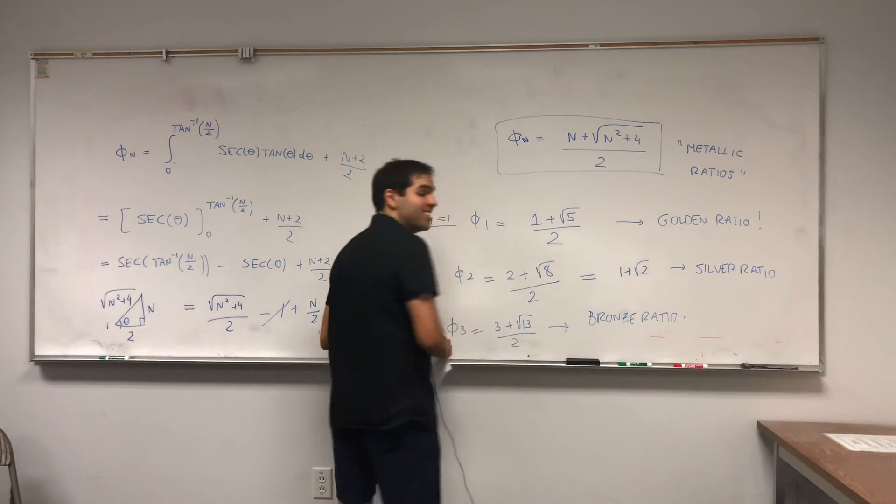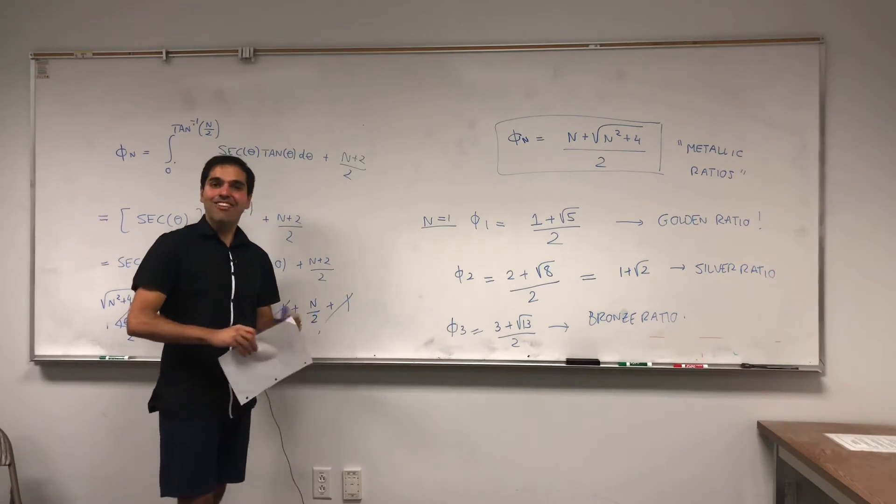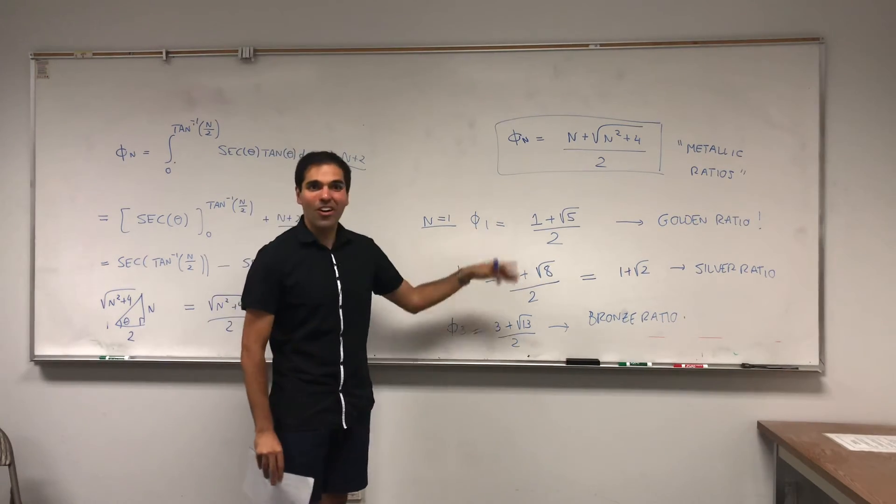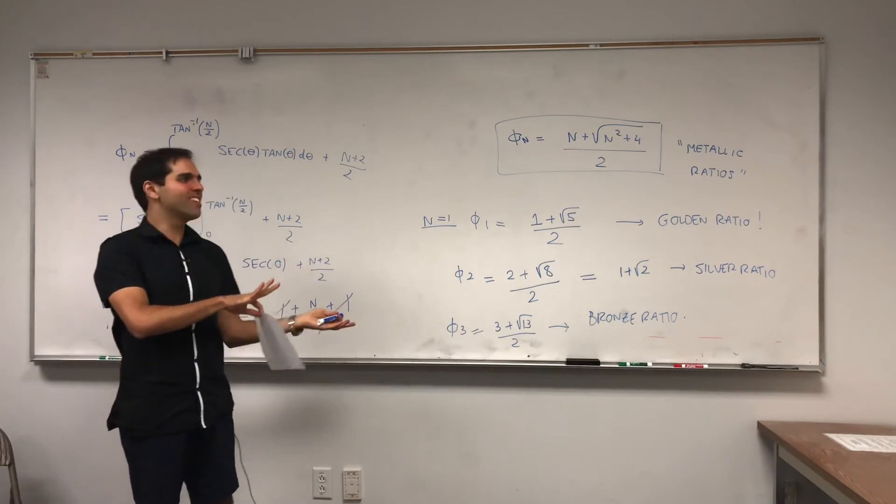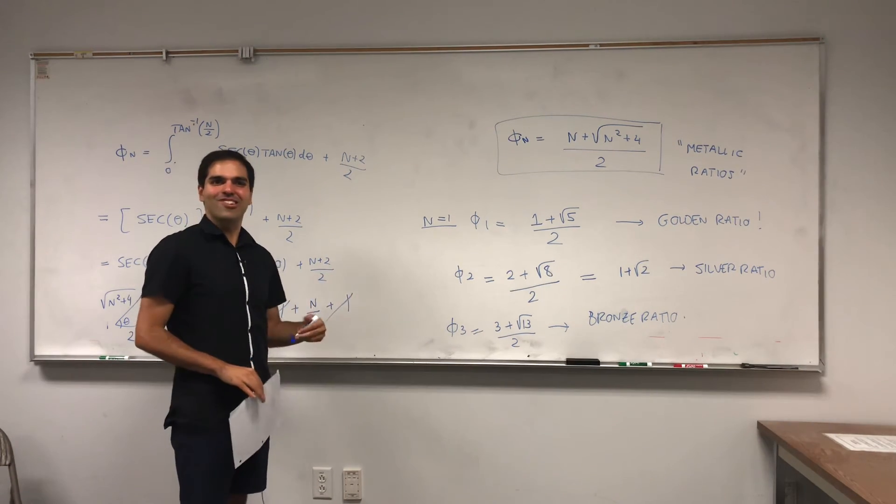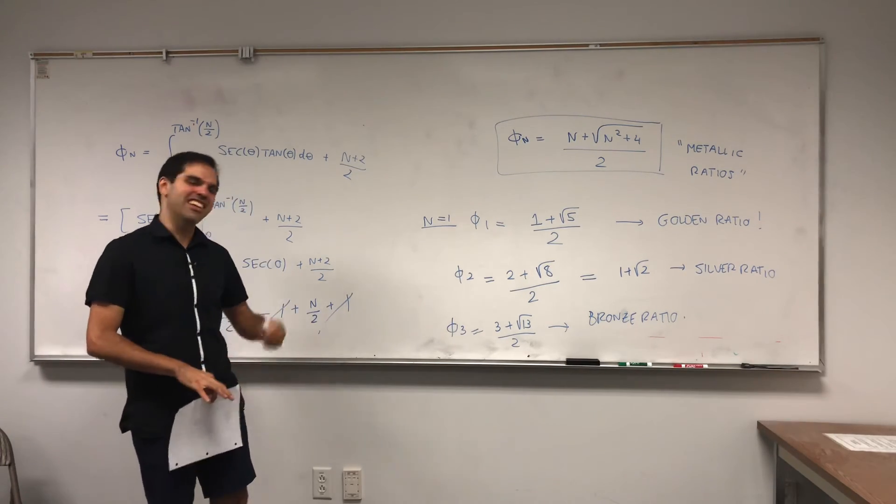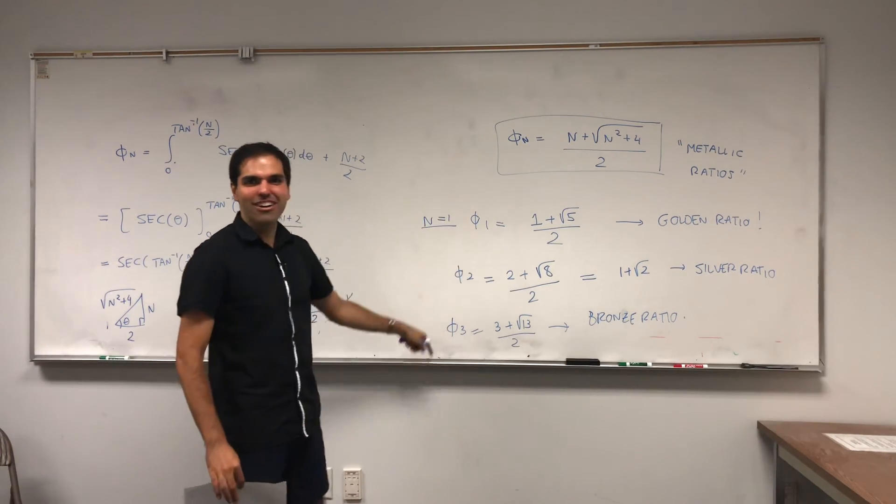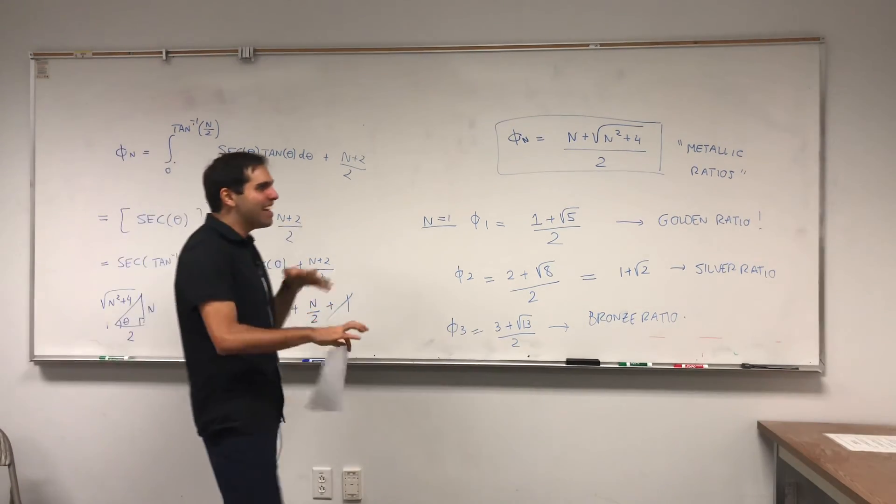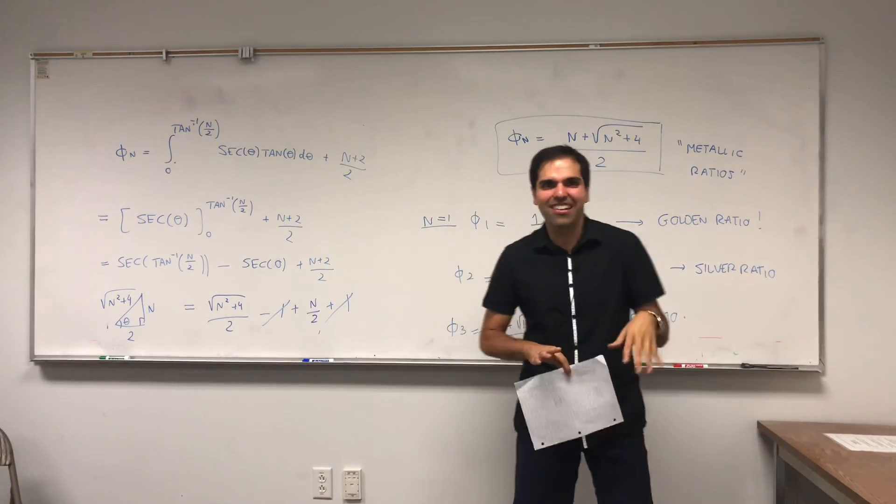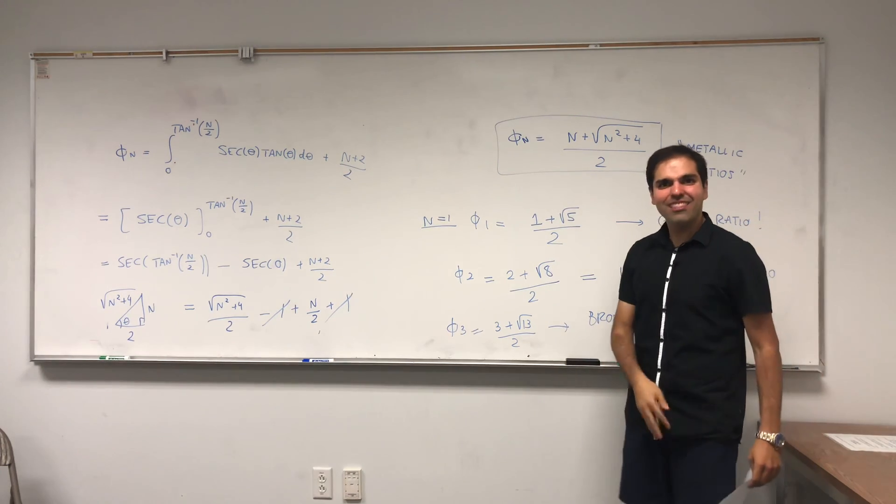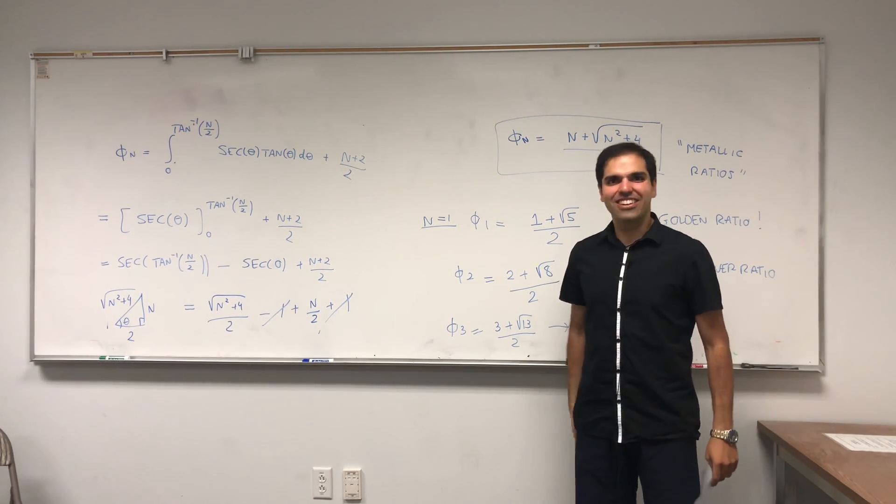And so on and so forth. And in fact in another future video at some point I'll talk more about those metallic ratios. They're really cool, they're basically generalizations of the golden ratio, and they have this cool name, sounds like Metallica. Yeah, rock and roll. Phi 1, phi 2, phi 3. All right, I hope you enjoyed this little trig integral calculus metal excursion, and if you like that and you want to see more math please make sure to subscribe to my channel. Thank you very much.